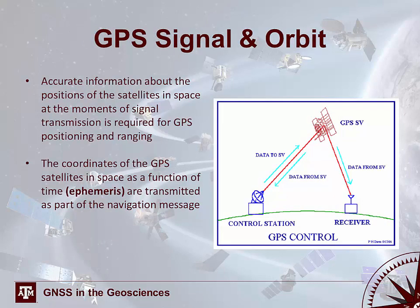As a reminder about GPS signals in orbit: accurate information about the positions of satellites in space at the moment of signal transmission is required to position yourself with a GPS system. The coordinates of the GPS satellites are transmitted as a function of time — this is the ephemeris — and are transmitted as part of the navigation message.